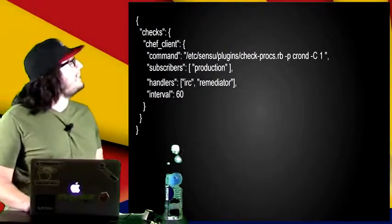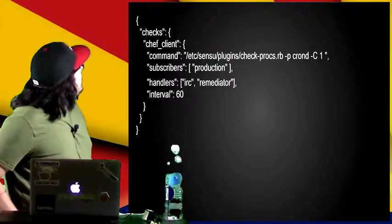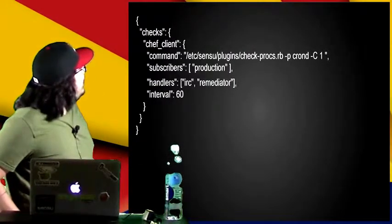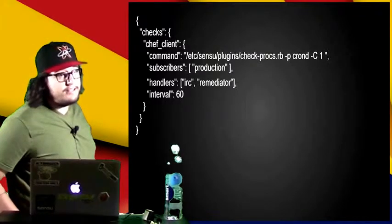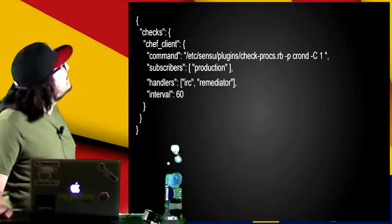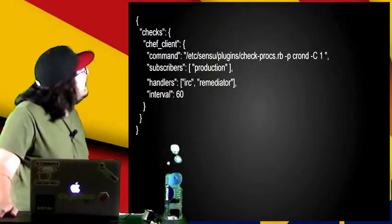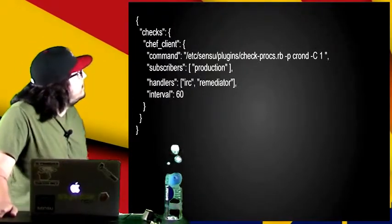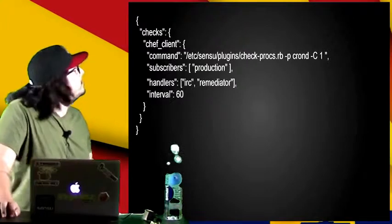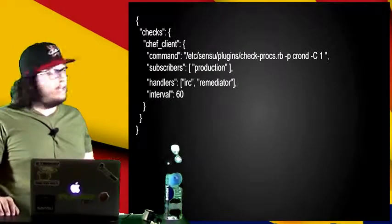This is what a basic check in Sensu looks like. It's just a JSON file that basically says I'm going to run something. I want to check for a running process — this is actually a cron-d check, so the command checks for cron-d. If there's more than one running, throw a critical error, and just make sure that cron-d is running. You can see the interval is every 60 seconds. We have it as a subscriber for a production system, so any clients that need cron-d running subscribe to this check and they'll automatically get it.